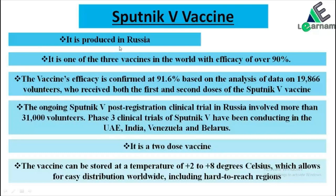The Sputnik vaccine is produced in Russia. It is one of the three vaccines in the world with efficacy of over 90 percent. The vaccine's efficacy is confirmed at 91.6 percent, based on the analysis of data on 19,866 volunteers who received both the first and second doses of the Sputnik vaccine.